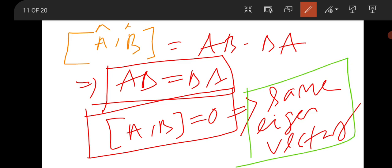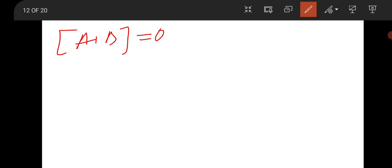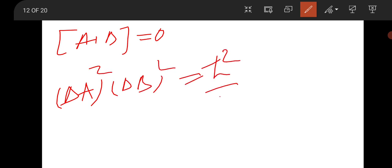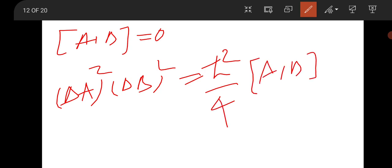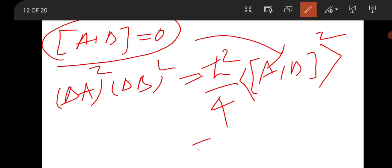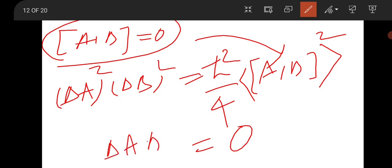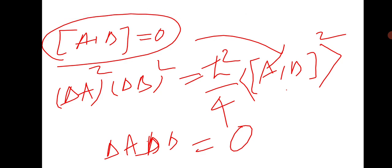If two operators commute, [A, B] = 0, they have a common eigenvector. From the uncertainty principle, ΔA·ΔB ≥ (1/2)|⟨[A,B]⟩|. If two operators have common eigenvectors, they are commuting; their commutator is 0, so their uncertainty is also 0 — meaning ΔA·ΔB = 0. There is no uncertainty in their simultaneous measurement.